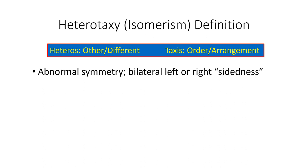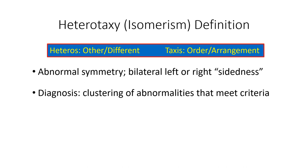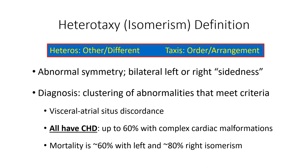The diagnosis is made when a clustering of abnormalities meeting criteria is present, all having to do with visceral-atrial situs discordance and other associated non-cardiac anomalies such as intestinal malposition and malrotation. All of these patients have congenital heart disease — up to 60% with complex cardiac malformations — and the mortality rate is about 60% with left atrial isomerism and up to 80% with right atrial isomerism.